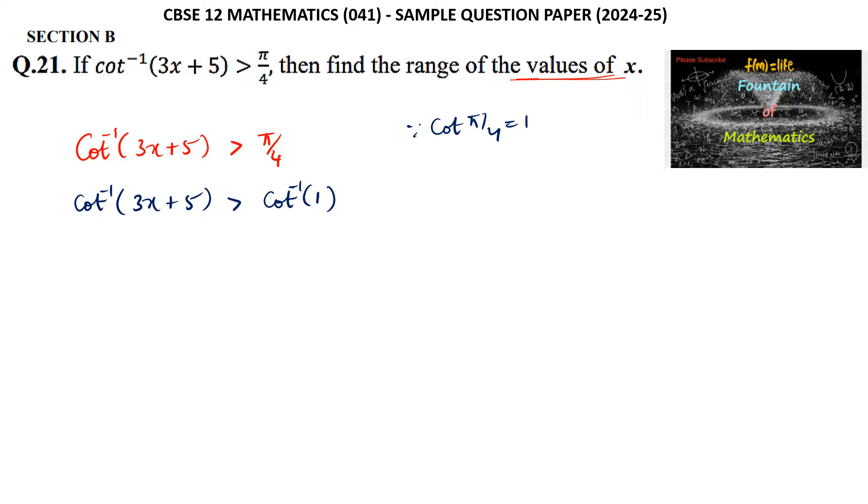Let's see the graph of cot⁻¹(x). The range is 0 to π, and the graph lies between 0 and π.